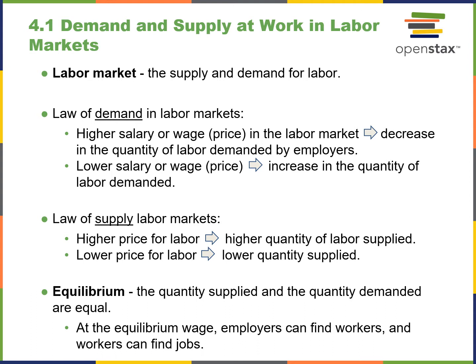The law of supply in labor markets: a higher price for labor means a higher quantity of labor supplied. If it's beneficial for the worker to go to work because they're getting paid well, more people will be looking for work. If everybody's working for minimum wage and that's all that's available, most people won't even bother — so a lower price for labor means a lower quantity supplied. And of course, there is an equilibrium point between the two, and that's where the law of supply and demand cross on a graph.